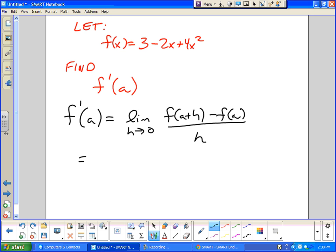So, it equals the limit as h goes to zero, of 3 minus 2 times a plus h, plus 4 times a plus h quantity squared, minus, plug in a, 3 minus 2a, plus 4a squared.